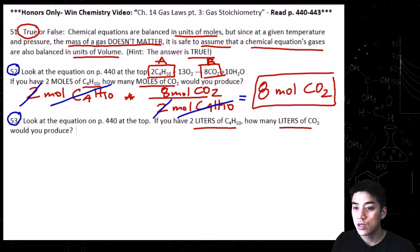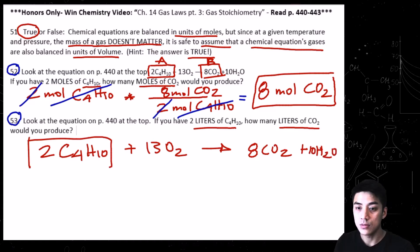Number 53, if you have 2 liters of C4H10, how many liters of CO2 would you produce now? So let's go ahead and write down a balanced equation. It's the same one that we used in number 52. I'm just going to copy it down again so it's nice and neat for you. We're going to go ahead and box C4H10 and CO2.